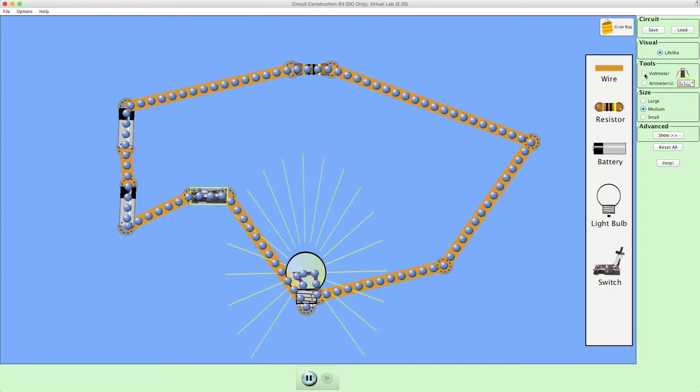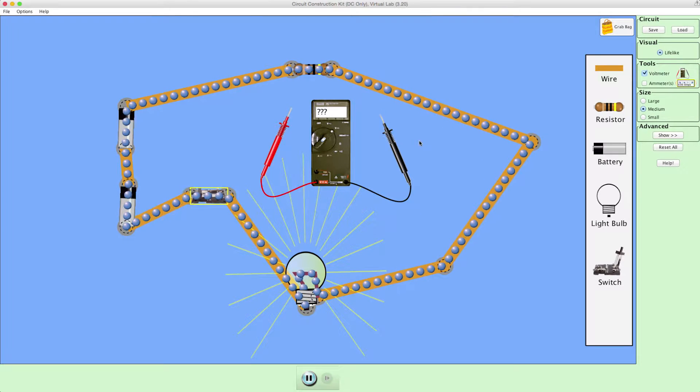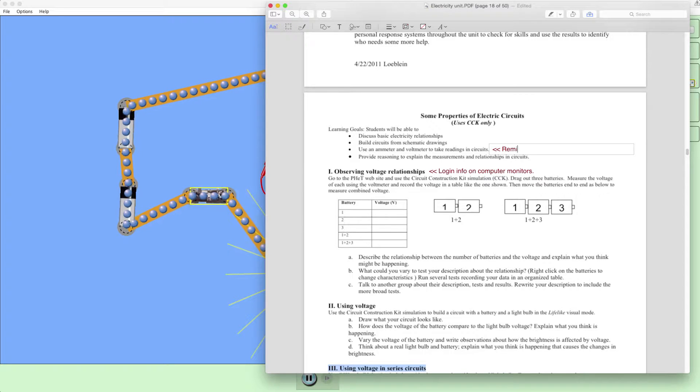You can also make note of any tools or features in the simulation that are particularly relevant to the activity's learning goals. You'll want to make sure that these are highlighted during class discussion.